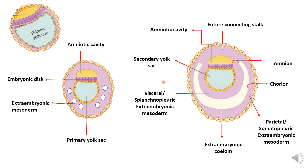There are some places where the mesoderm is unsplit. That unsplit mesoderm — by which the embryo and the amniotic cavity are attached to the trophoblast — will form the future connecting stalk.